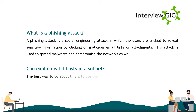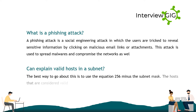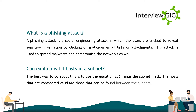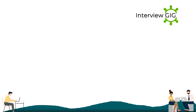Can you explain valid hosts in a subnet? The best way is to use the equation 256 minus the subnet mask. The hosts that are considered valid are those that can be found between the subnets.